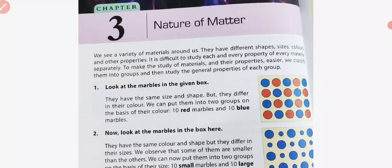Around us there are many materials with many varieties. How many differ in shape? How many differ in size? How many differ in color? How many are rough? How many are soft? There are a lot of differences. In the first few lines, we see that our surroundings have a lot of variety — some shapes are different, some sizes, some colors, and some other properties. So it is difficult to study each and every property of materials separately.